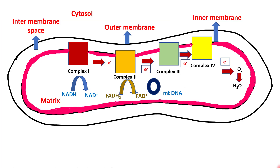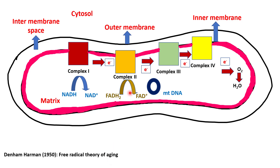In the 1950s, Denham Harman proposed the free radical theory of aging. Mitochondria are cell organelles which function to provide the cell with energy by producing ATP.